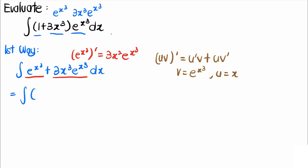We can see that the whole integrand is essentially just the derivative of x times eˣ³. The first term comes from differentiating x, giving 1 times eˣ³, and the second term comes from differentiating eˣ³, giving 3x² times eˣ³ times x. By the fundamental theorem of calculus, integrating gives x times eˣ³ plus C. That is our answer for the first method.